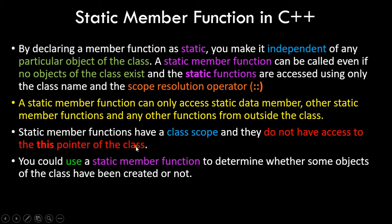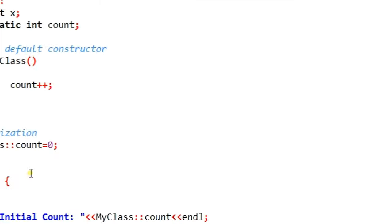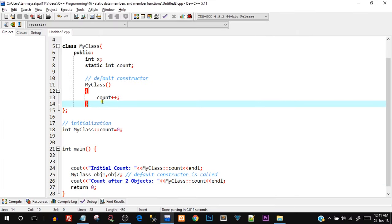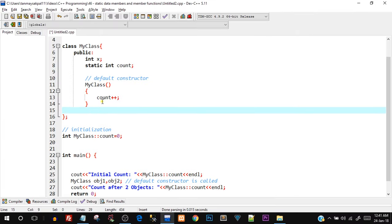Static member functions have class scope and do not have access to the 'this' pointer of the class, since they are at class level rather than object level. You could use a static member function to determine whether any objects of the class have been created or not. Let's try to create a static member function in our existing program.